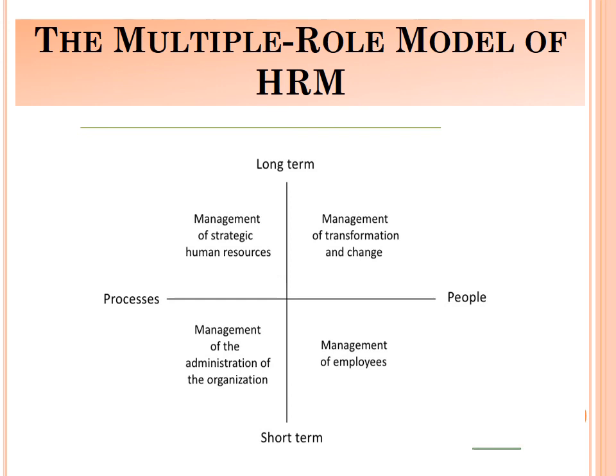The flow sheet diagram for the multiple role model shows a long-term and short-term axis. In the long term regarding process, it is management of strategic human resources; in the long term regarding people, it is management of transformation and change. In the short term regarding process, it is management of the administration of the organization; and in the short term regarding people, it is management of employees.